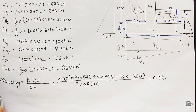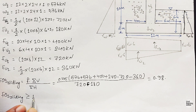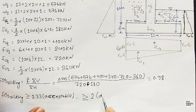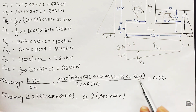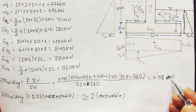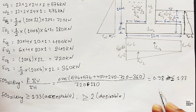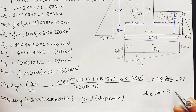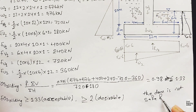The condition for the factor of safety against sliding is that it must be greater than or equal to 1.33 to be acceptable, and ideally greater than or equal to 2 to be desirable. Since our calculated value is 0.98, which is less than the acceptable value of 1.33, the dam is not safe in the sliding condition.